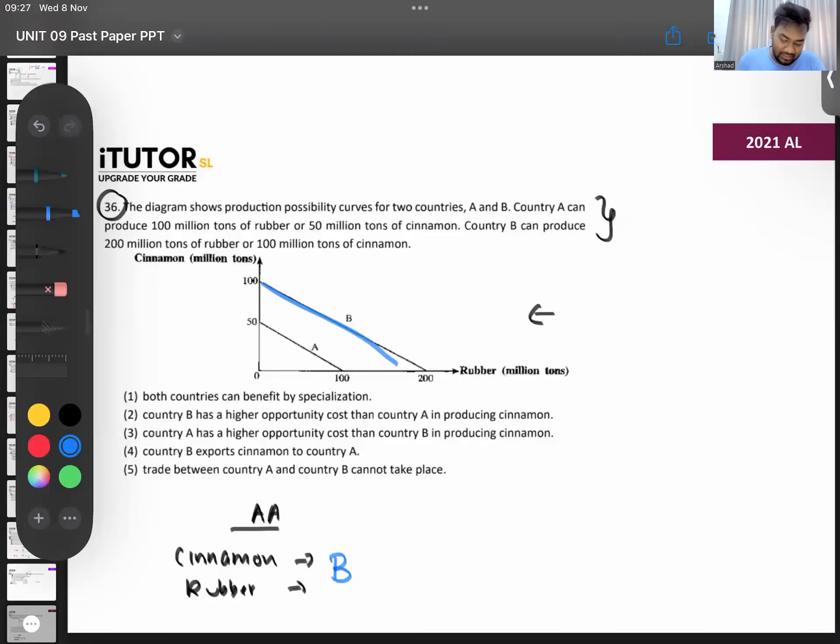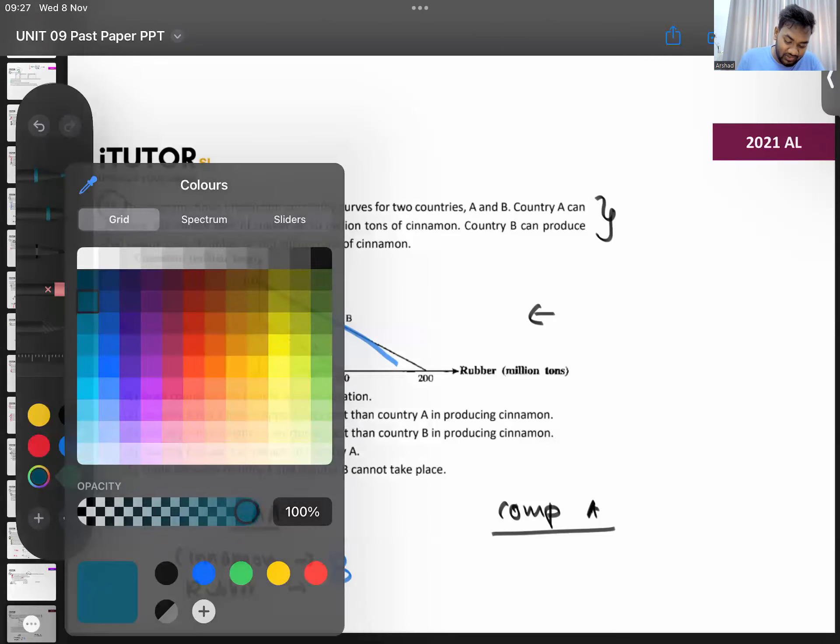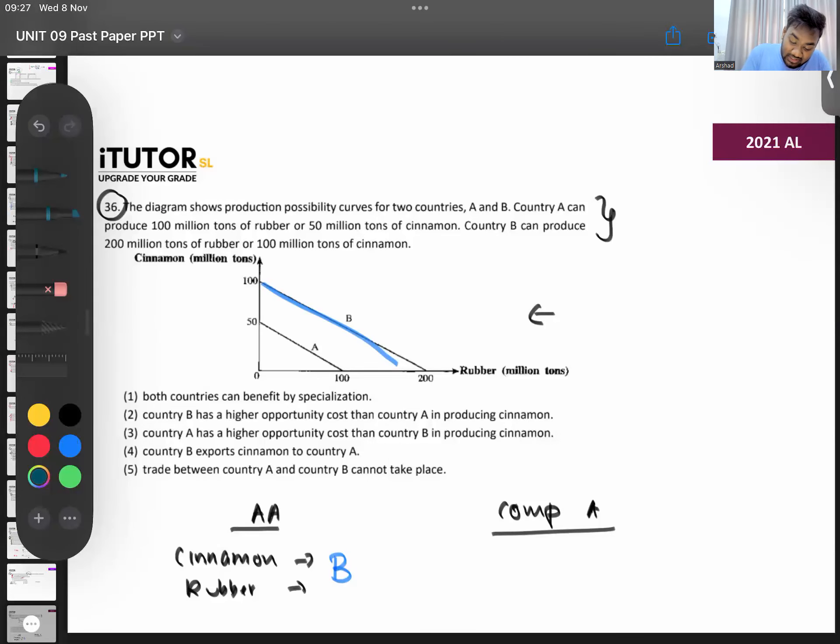Then comparative advantage. To find comparative advantage, you have to find opportunity cost. Looking at the numbers, the opportunity costs appear the same, so we'll put this into a table. Country A, Country B - one good is cinnamon, the other good is rubber. Country A can produce 50 cinnamon, 100 rubber. B can produce 100 cinnamon, 200 rubber.